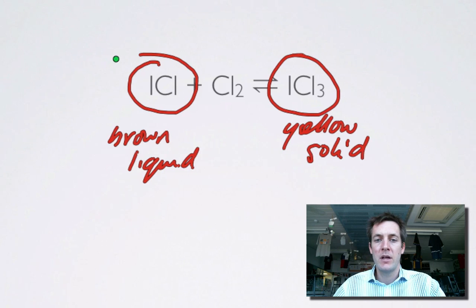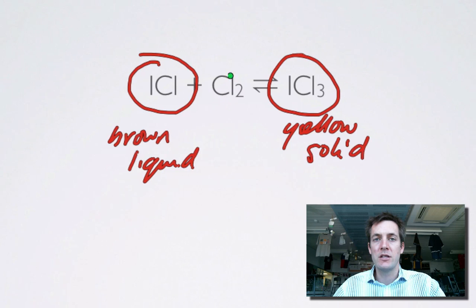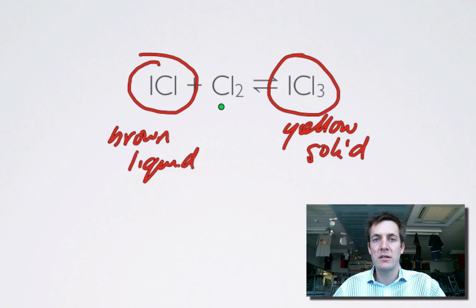So what's going on? As we add chlorine, Le Chatelier's Principle says the system will try to remove it because the concentration has gone up, so it will shift to the right. Adding chlorine turns brown liquid into yellow solid. If we remove chlorine, Le Chatelier's Principle says the system will try to replace it by going in the backward direction, since the backward reaction favours the production of chlorine. So adding a reactant increases product concentration, and removing a reactant increases reactant concentration by speeding up the backward reaction.